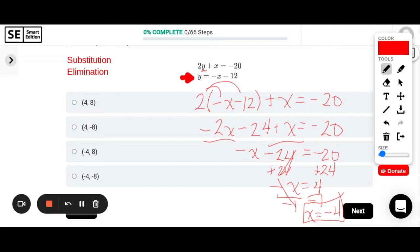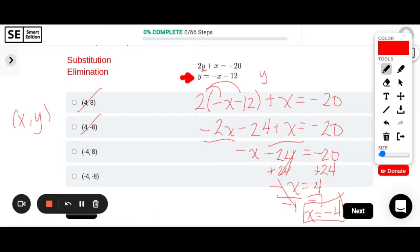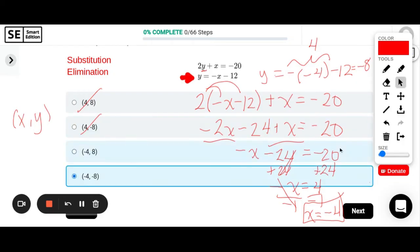So x equals negative 4. That helps me eliminate a few options here, so neither of these can be correct because I need my x value to be negative 4 and these are in coordinate form or xy form. So now in order to find my y I'm just going to plug in negative 4 into one of these equations. So let's plug it into this y equals equation. So y equals negative, and then instead of x we know x is negative 4, minus 12. Negative negative 4, that's really just a positive 4. So positive 4 minus 12 is negative 8. So my y value is negative 8. So x is negative 4, y is negative 8, and there is our solution.